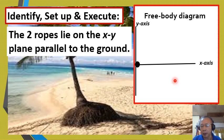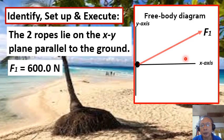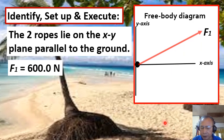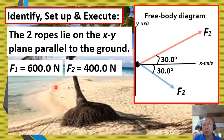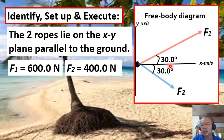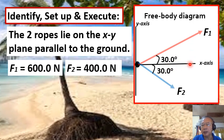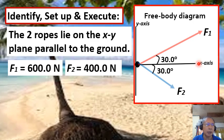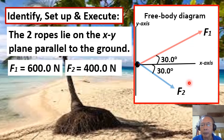The force exerted by Logger 1, F1, is equal to 600.0 Newton and it is directed as shown in the diagram. The force exerted by Logger 2 is represented by the blue arrow, labeled F2, which is equal to 400.0 Newton. Since the angle between the two forces is 60.0 degrees, each force makes an angle of 30.0 degrees — F1 is 30.0 degrees above the positive x-axis, while F2 is 30.0 degrees below the positive x-axis.